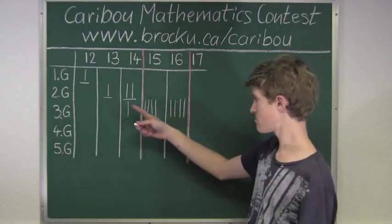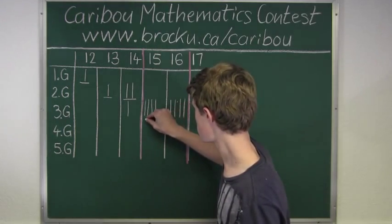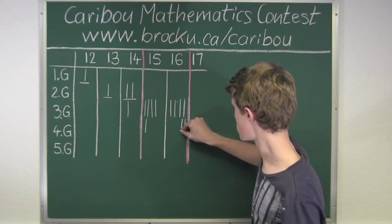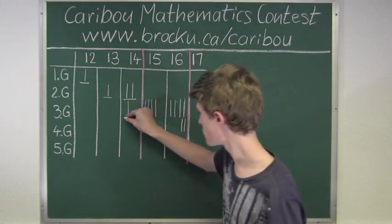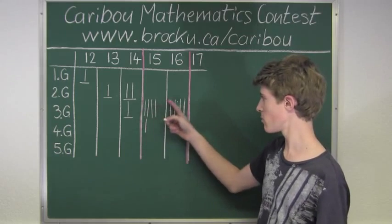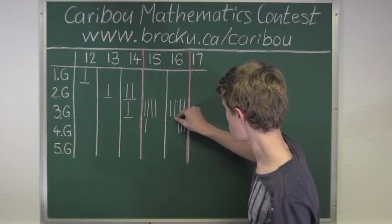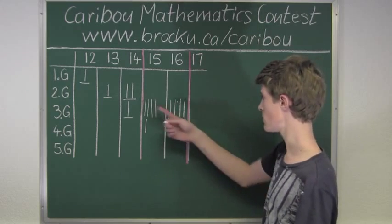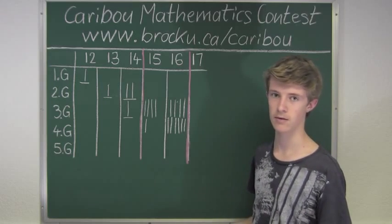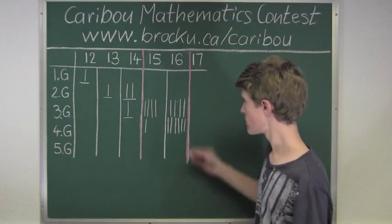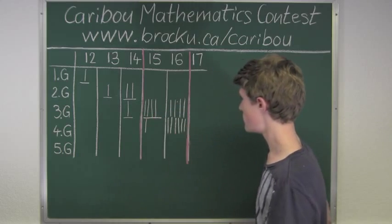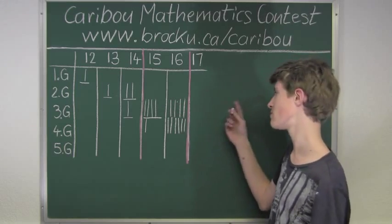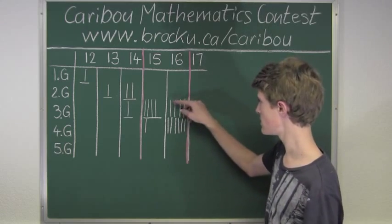Moving on: this Blorb gives birth to one Blorb one hour later and two Blorbs two hours later, so it is accounted for. Each of the four Blorbs gives birth to one Blorb one hour later — that's one, two, three, four — and to two more Blorbs each two hours later. But we won't count that because it is after 4:30 p.m. So these four Blorbs are accounted for. Similarly, each of those four Blorbs gives birth to one Blorb one hour later and two Blorbs two hours later, but that is after 4:30 p.m., so those are also accounted for.